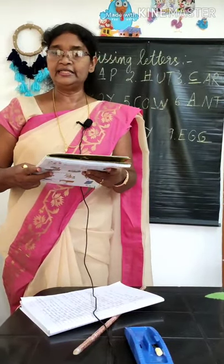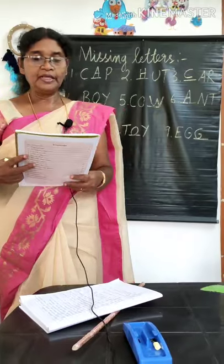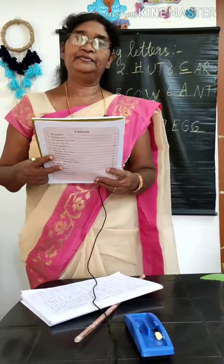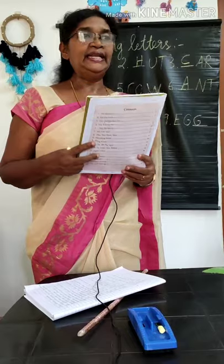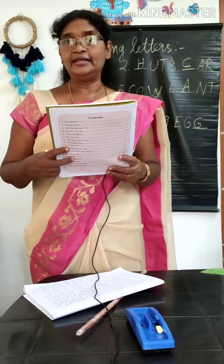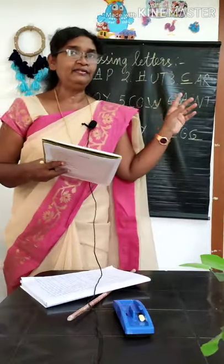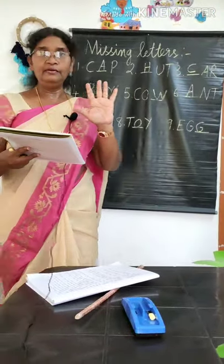We finished our first lesson. Our first lesson is over. Now I am going to ask you some questions. How many letters are there in the English alphabet? There are 26 letters. How many vowels are there? Five vowels — A, E, I, O, U.